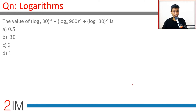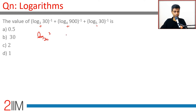The value of log 30 to the base 3, to the power minus 1, plus log 900 to the base 4 to the power minus 1, plus log 30 to the base 5 to the power minus 1. There's 30 involved, 3 involved here, 4 involved here, 5 involved here. Log 30 to the base 3 whole power minus 1 is nothing but log 3 to the base 30. This is nothing but log 4 to the base 900, nothing but log 5 to the base 30.